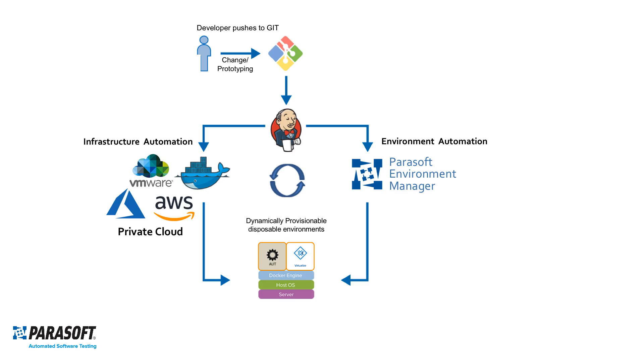When a developer checks code into source control, we can use that as a trigger to kick off our CI build system, whether it's Jenkins, TeamCity, VSTS, or Bamboo.